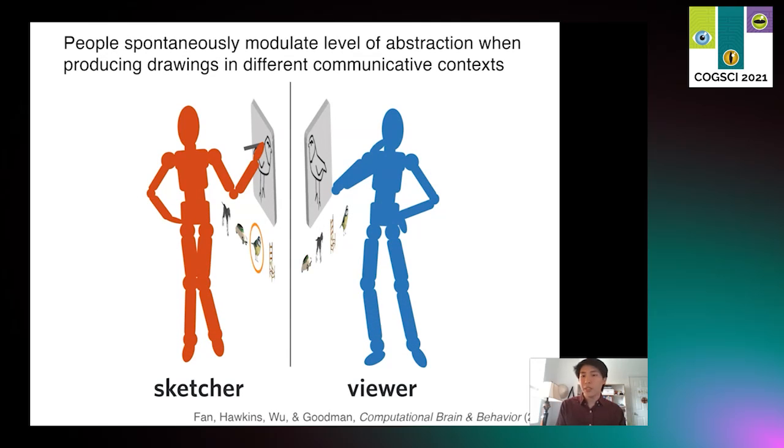A recent study by Fan and colleagues explored the effect of communicative context on the type of drawings people produce. In this study, pairs of participants were each shown a set of four objects. One of the participants, the sketcher, aimed to draw one of these objects such that the second participant, the viewer, could identify which object was the target.